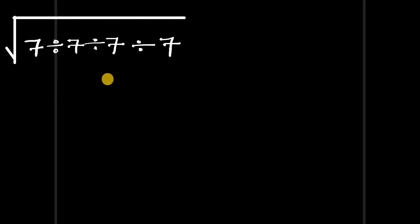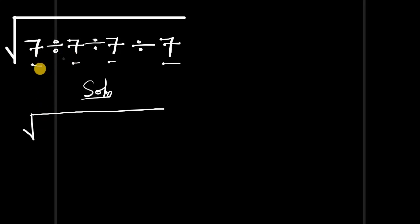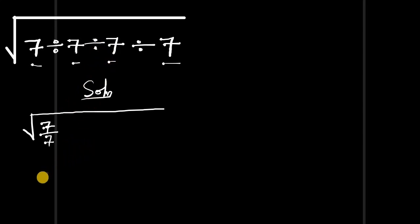Hello, in this video we are going to simplify this without using a calculator. We have the square root of seven divided by seven, divided by seven, and divided by seven. Let's get started. We have our square root symbol here, and for the first two terms we have seven divided by seven.